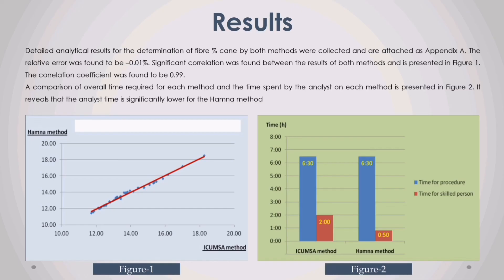Results. Detailed analytical results for the determination of fiber percent cane by both methods were collected and are attached as Appendix A. The relative error was found to be minus 0.01 percent. Significant correlation was found between the results of both methods and is presented in Figure 1. The correlation coefficient was found to be 0.99. A comparison of overall time required for each method and the time spent by the analyst on each method is presented in Figure 2. It reveals that the analyst time is significantly lower for the Hamner method.